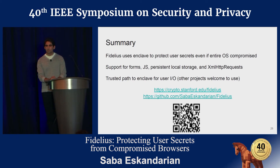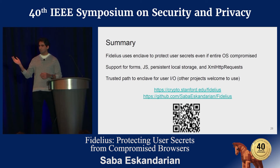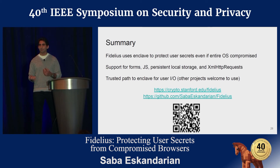Second question: have you looked into NLP research to automatically detect the labels of what you're about to type into — for example, recognizing a credit card security code field and automatically switching into secure state, so the user doesn't have to press a button but can just visually confirm? Yes, absolutely — that's a great idea. You have to add the 'secure' attribute to a tag to indicate it's trusted, but there's no reason why some other software couldn't detect when sensitive information is involved. That could be totally compatible with our system.